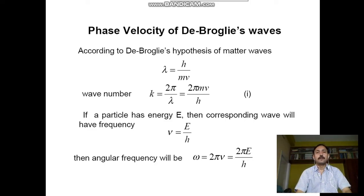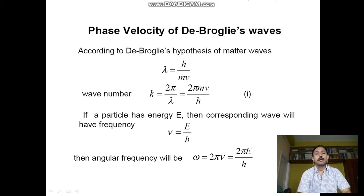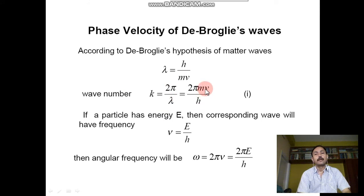Phase velocity of de Broglie waves: according to de Broglie's hypothesis, λ = h/mv, and wave number k = 2π/λ. Substituting λ = h/mv gives k = 2πmv/h.